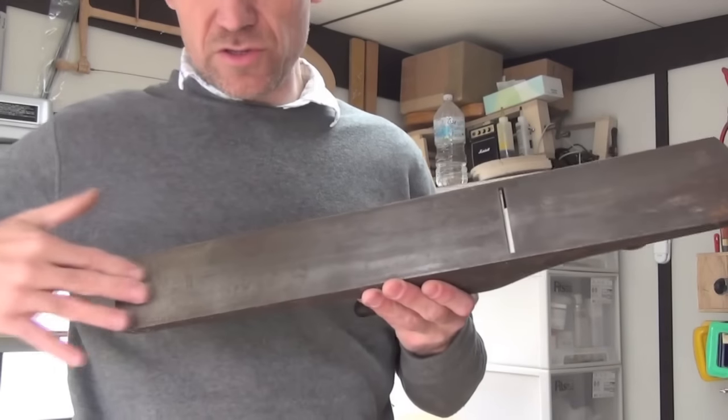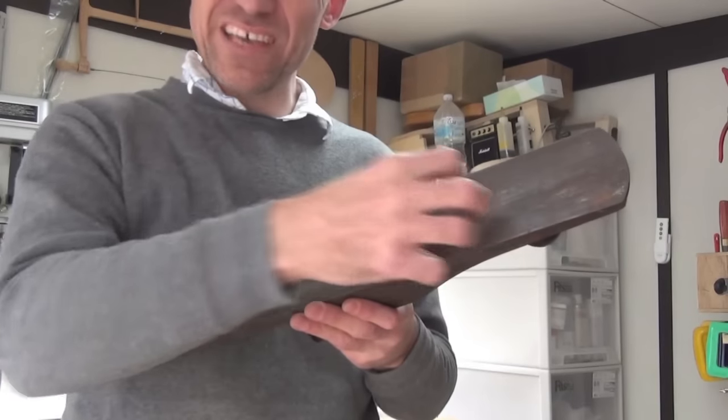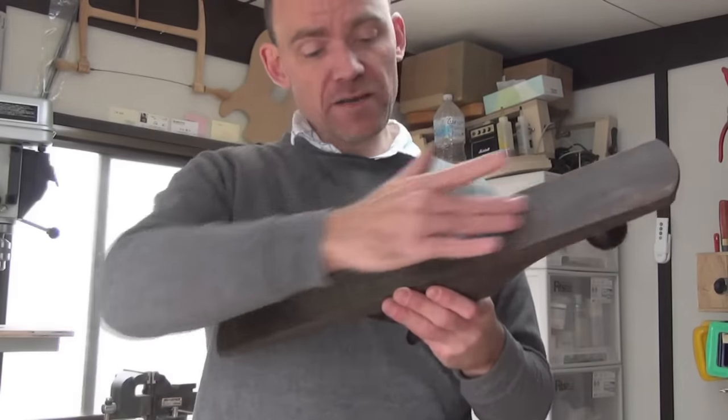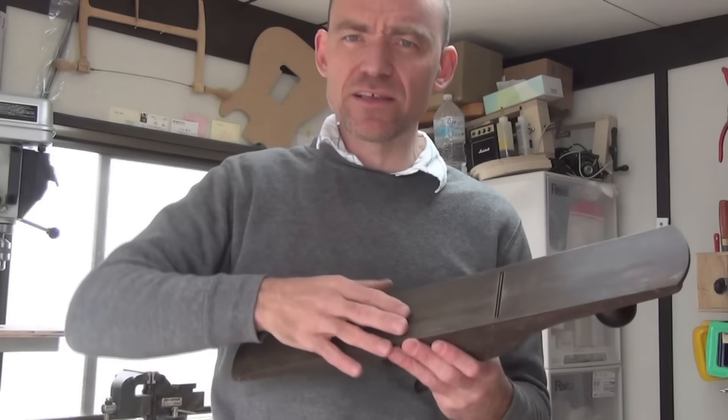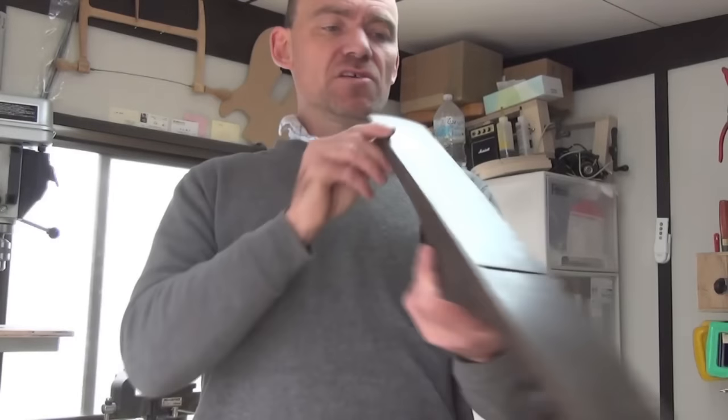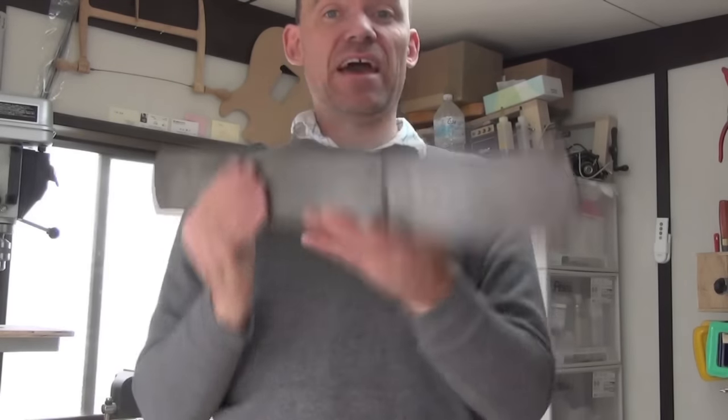Also look at the sole. If you can see deep scoring or pitting from rust, walk away. But this one has light scratching and very light surface rust. Other things: is the sole basically flat? This one is basically flat.